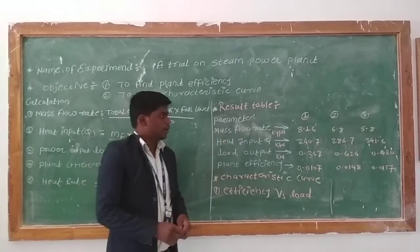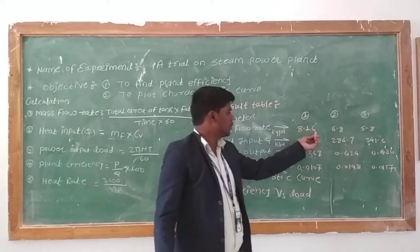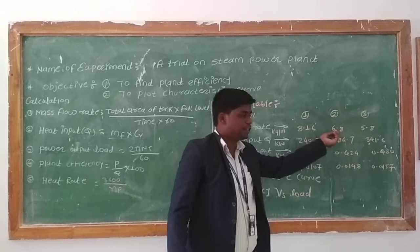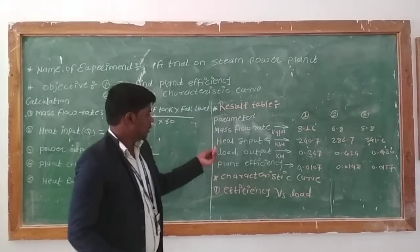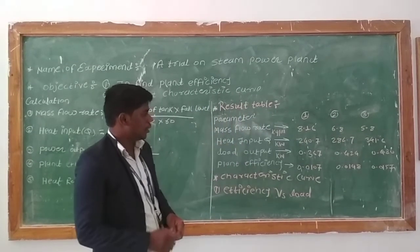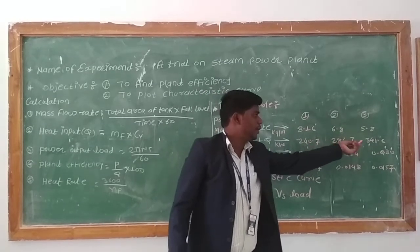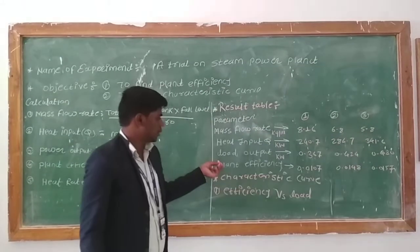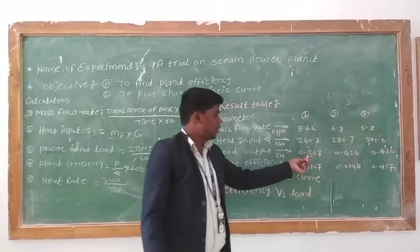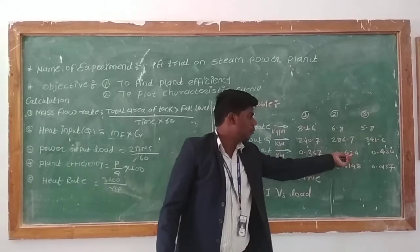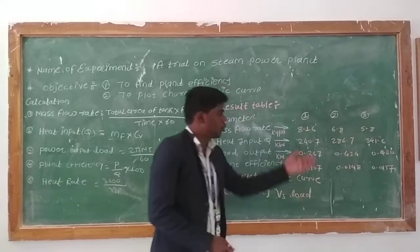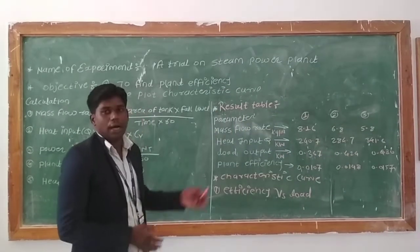In the results: mass flow rate for first is 8.16 kg per meter, second 6.8, third 5.8. Heat input is 240.7 kW, 284.7, and 241.6. Load output: 0.367, 0.424, and 0.480.